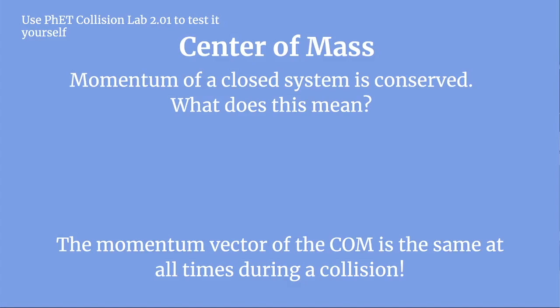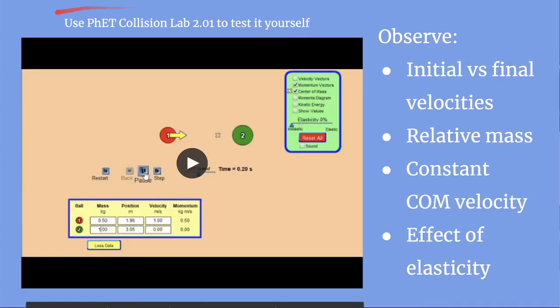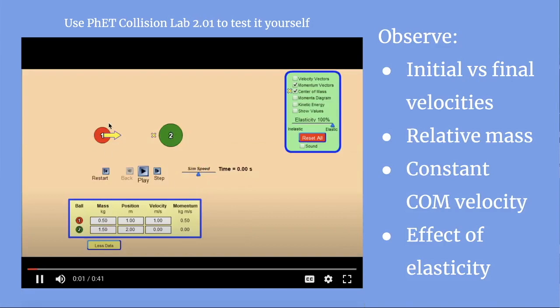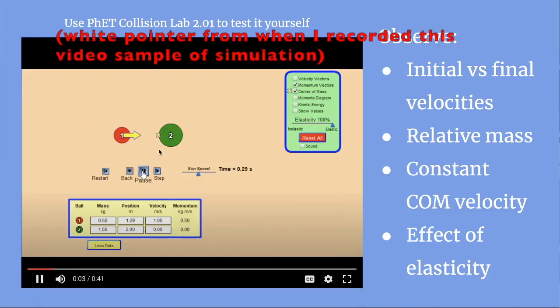So let's check this out. This is a sample of the PhET simulation I was talking about. I'm going to ask you to observe these quantities over the course of the video as these two masses interact. Before we even start playing the video, I just want to note that I checked off momentum vectors and center of mass represented by this little x right here. So this arrow does not represent the velocity, it represents the momentum. And all of these values down here you can manipulate for yourself when you try the lab.